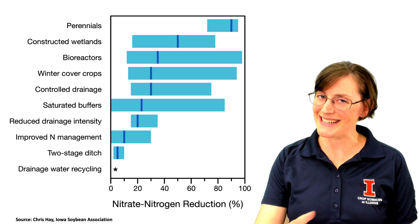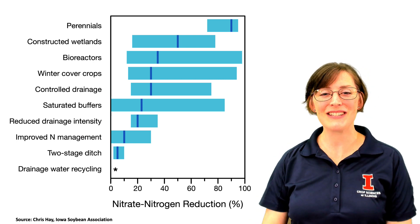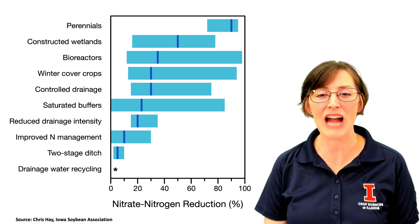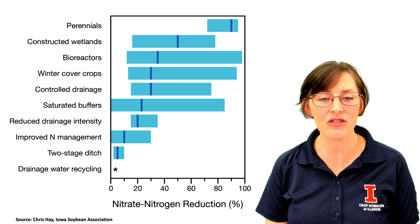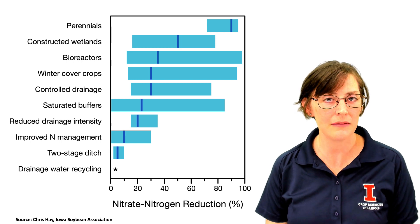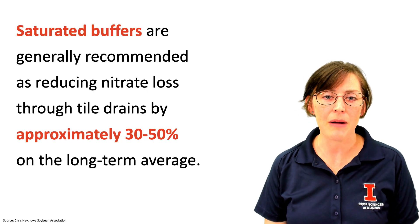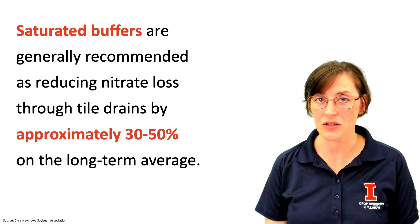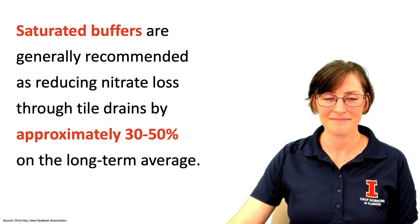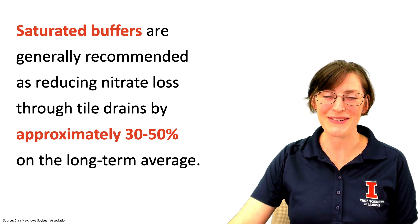Since this is a conservation drainage practice, you may be wondering how well saturated buffers work to keep our water clean. They're generally rated at about 30 to 50 percent nitrogen loss reduction. Thanks for tuning in — I'll see you next time.